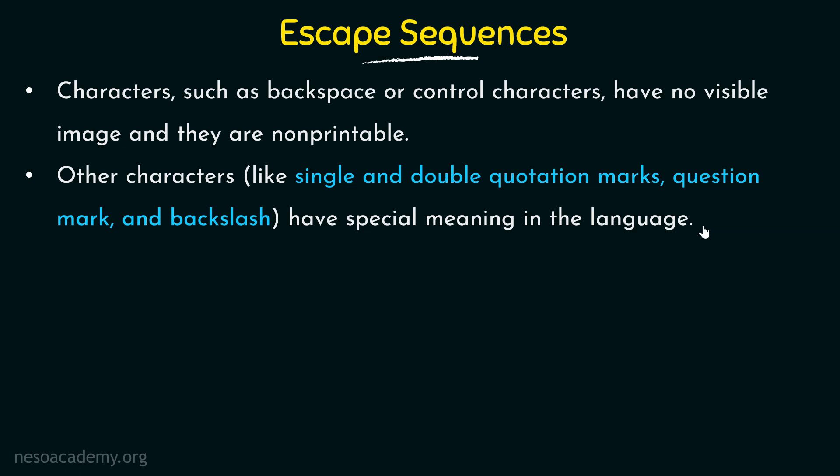So far we have been writing quite a few programs in C++ and we have seen the use of single quotes, double quotes, and even backslashes. For example, when you want to print something using the cout statement, we put what we want to print inside the double quotation marks. We know that double quotation marks are part of the syntax and have special meaning. So if you want to print the double quotation mark itself, we need to make use of an escape sequence.